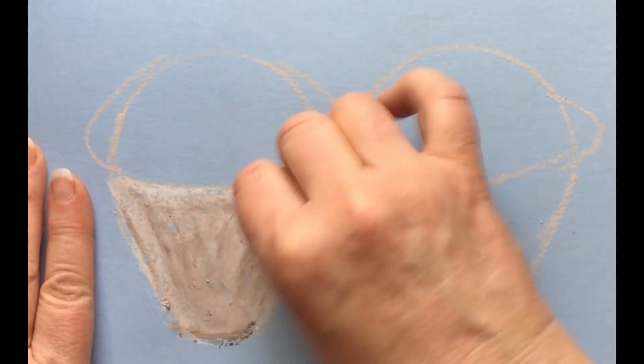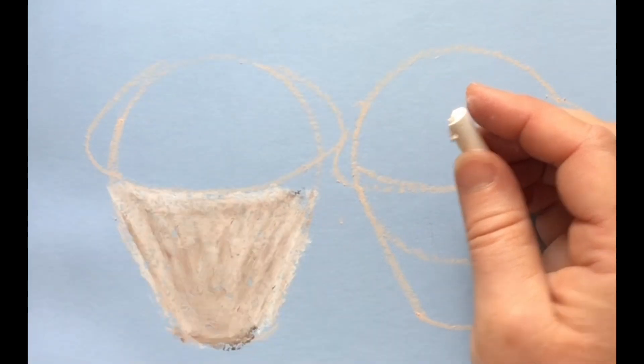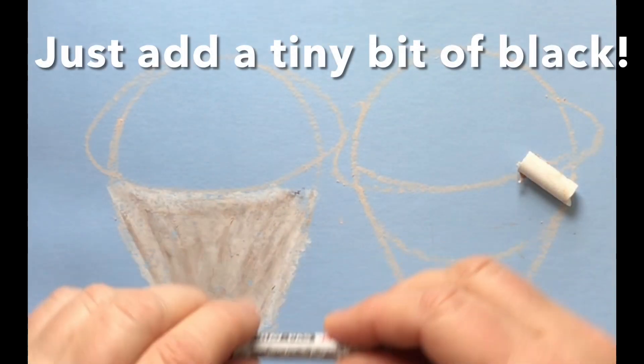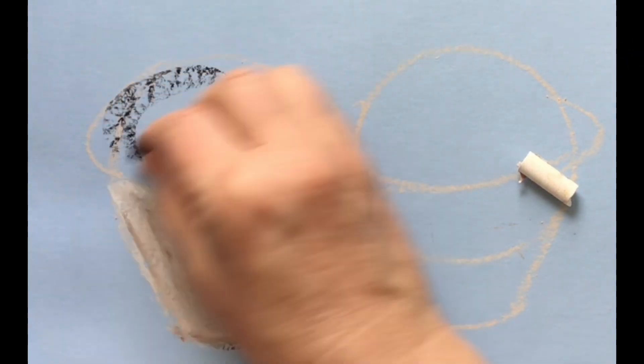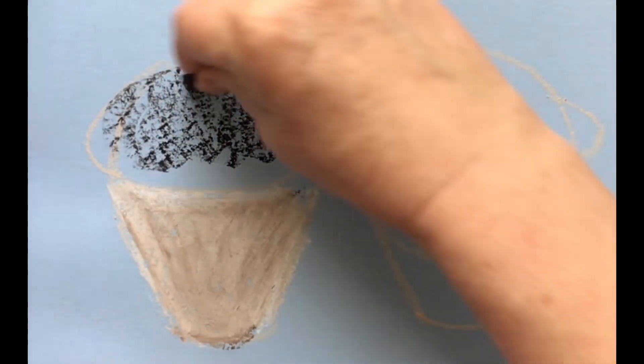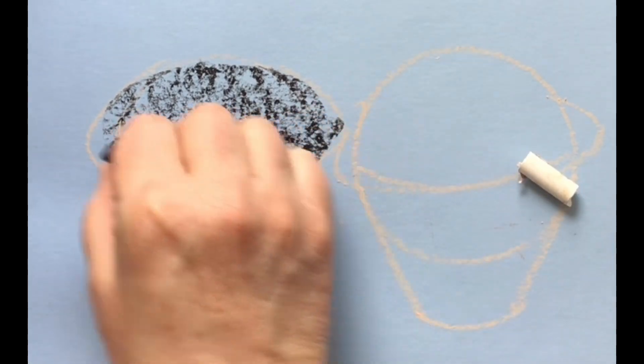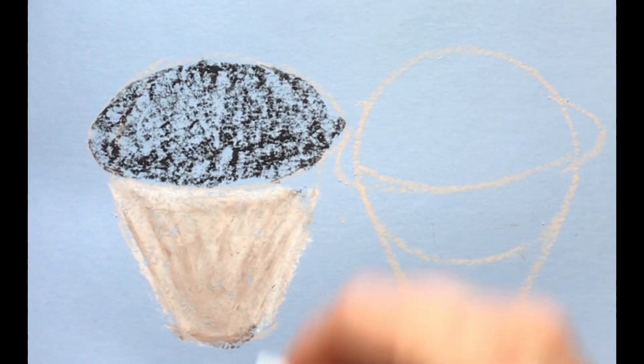So you can also do the same thing with black ivory black. You take a little bit of it and you can put this on here, and then you can add white to it and that will make a tint of a color.